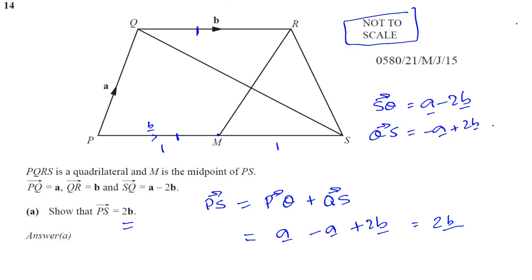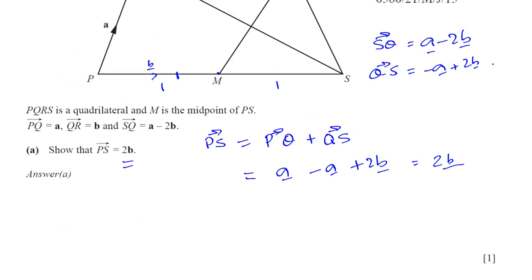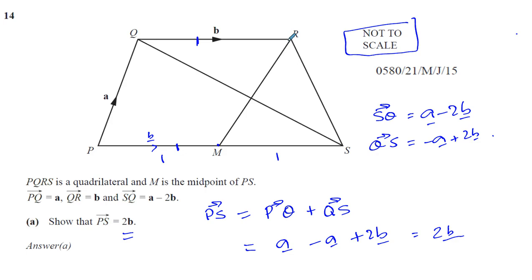Now, in order to prove what they are, this is worth two marks, we've got to really find out what MR is, to see how does that relate to PQ. MR, what is the vector from M to R? Well, we can find it quite easily.